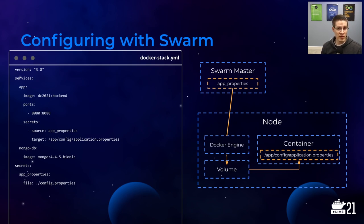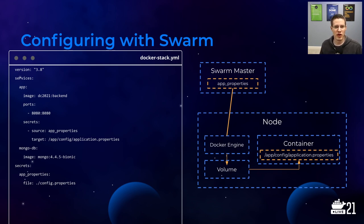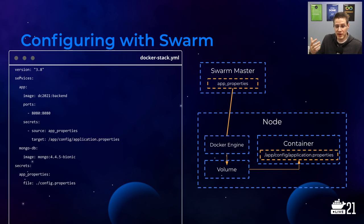If I'm doing this with Swarm, it looks a little different because now my container may be running on one of many nodes in my cluster, and I don't know exactly where it's going to run — I can't just mount the volume. So I enroll a secret named 'app-properties' with the file as this config.properties. Then my app container references that secret and puts it at app/config/application.properties. When my app starts up, it just reads that file, configures itself, and it's great.